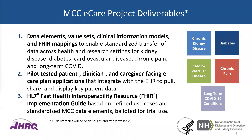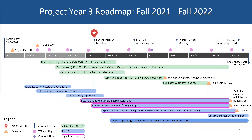We have three key deliverables: first, around data elements identification, value sets, FHIR mappings, etc.; second, the care plan application — smart-on-FHIR applications that can be used by patients, clinicians, and caregivers for the EHR; and third, the FHIR implementation guide. On the right, these are all domains you're familiar with. The newest domain is the long-term COVID conditions domain. This is our year three roadmap, with green activities mostly related to data elements and value sets work, and blue for apps and IG work.